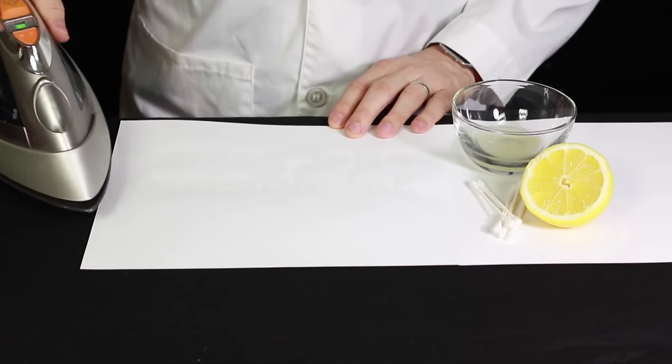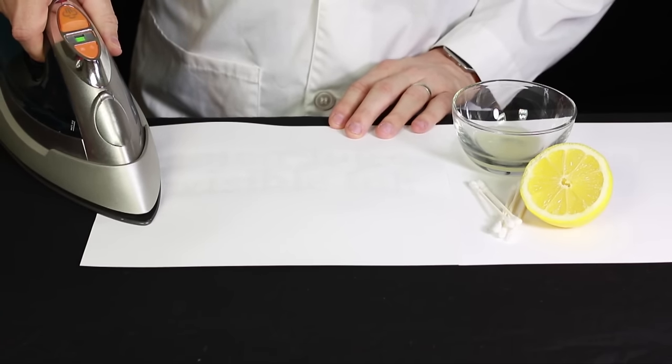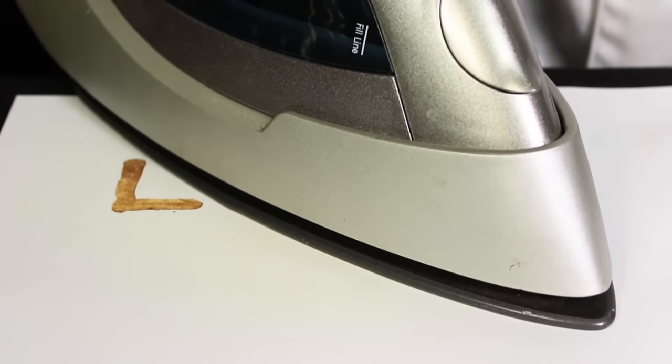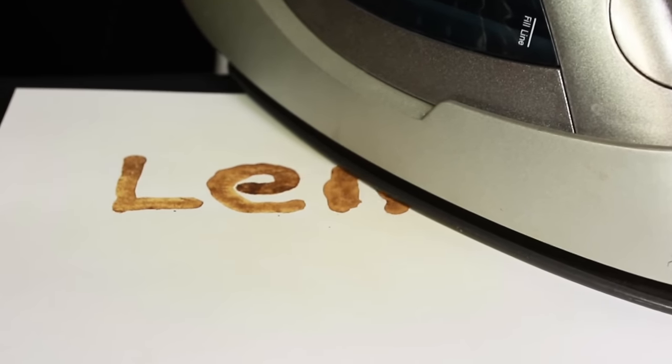Now it's time to reveal your secret message. Take a clothing iron and turn it on high. Slowly glide the iron across the piece of paper, making sure not to leave it long enough to catch the paper on fire.